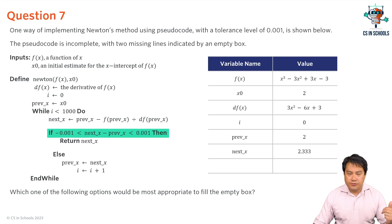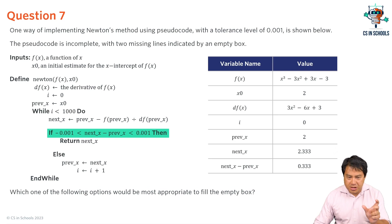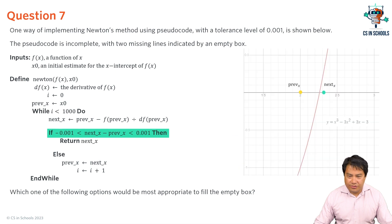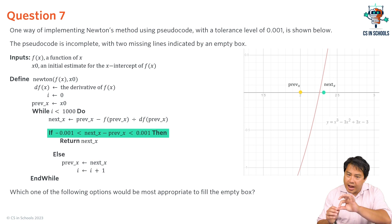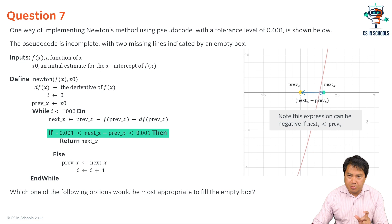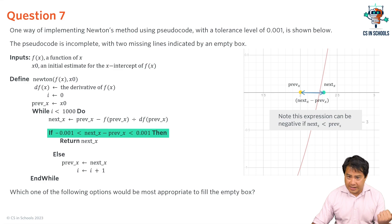We're now approaching the two lines of code we need to fill in. Looking at the first line, focusing on the middle expression between the two less-than signs: next_x − previous_x. Evaluating this gives 2.353 − 2. This calculates the gap between the next estimate and the previous value. Note this can be negative, since next_x can be to the left of previous_x, as we'll see in a later iteration.